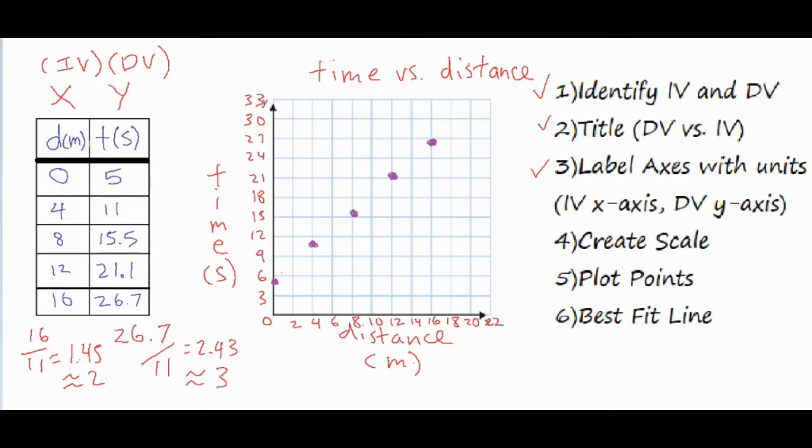So I went ahead and plotted my five points, and what I typically do is I just slide over a certain amount for the X value, and then I scoot up the certain amount for the Y value. So my first one is 0, 5, so I start at 0 and then I slide up 5. The second one is 4, and then I slide up to 11. The third one is 8, and I slide up to 15.5, and so on.